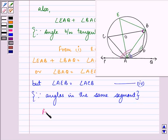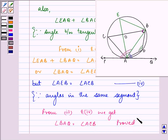From the third equation, we get angle BAQ is equal to angle ACB. Hence, we have proved one part of the proof that was required to be done over here.